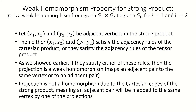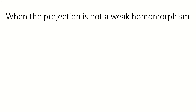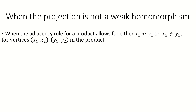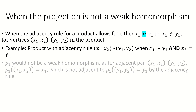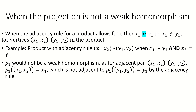Now you might be wondering what kinds of products would have a projection that is not even a weak homomorphism. The answer is any product where a pair of vertices can be adjacent with either their first or second coordinates being non-adjacent, distinct vertices in their respective factor graph. For example, if we had a product where the adjacency rule was that the first coordinates have to be distinct, non-adjacent vertices, and the second coordinates have to be the same vertex, the projection p sub 1 would not be a weak homomorphism because any pair of adjacent vertices in the product will be mapped to a pair of distinct non-adjacent vertices in the first factor.